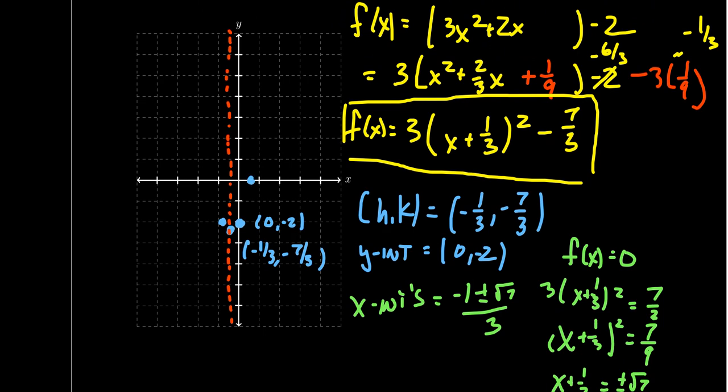This one right here would be negative 1 plus the square root of 7 over 3, 0. And then by symmetry, we get the other one. But that would be about right here. In which case, this one was negative 1 minus the square root of 7 over 3, 0.